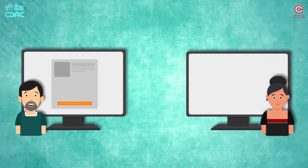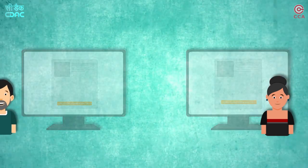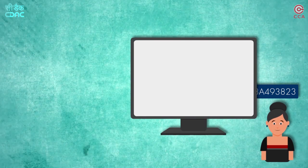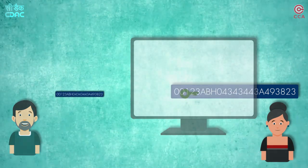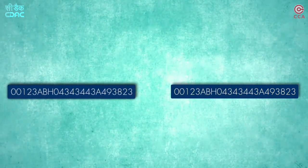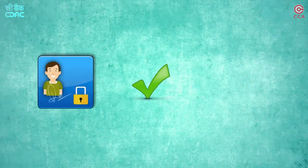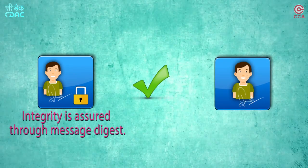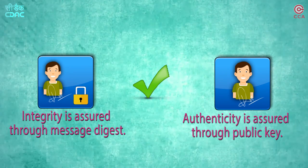Anybody who wants to verify the authenticity and integrity of the digitally signed document will perform the following steps. The received message is fed to the cryptographic algorithm that produces the message digest. The digital signature that came along with the message is decrypted using the signer's public key, which produces the message digest computed by the signer at the time of digital signing. If both the message digests match, then the document has not been tampered — integrity is assured through message digest and the claimed signer had indeed digitally signed it. Authenticity is assured as the public key of the signer was able to successfully decrypt the digital signature.